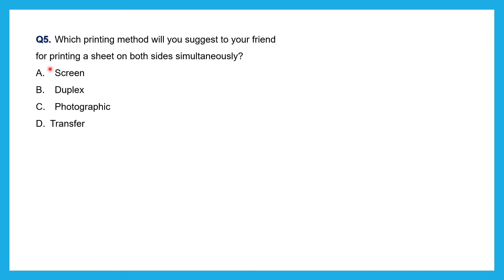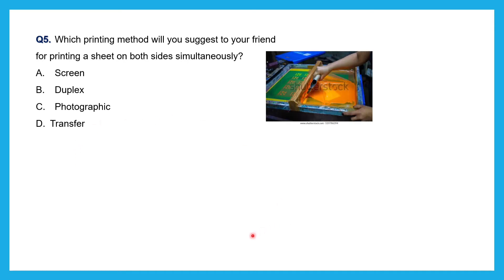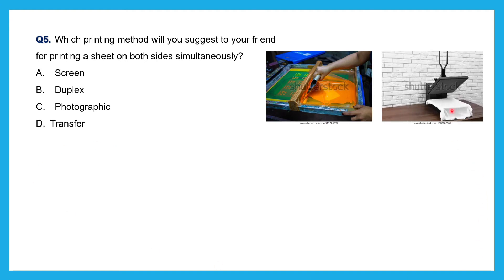Question number five: Which printing method would you suggest for printing a sheet on both sides simultaneously? The options are screen printing, duplex printing, photographic, and transfer printing. Screen printing uses a frame with minute holes through which color is poured and pressed to transfer the design — more like stenciling. Photographic printing transfers real photographs to fabric. Transfer printing applies pre-made designs to fabric by applying heat.